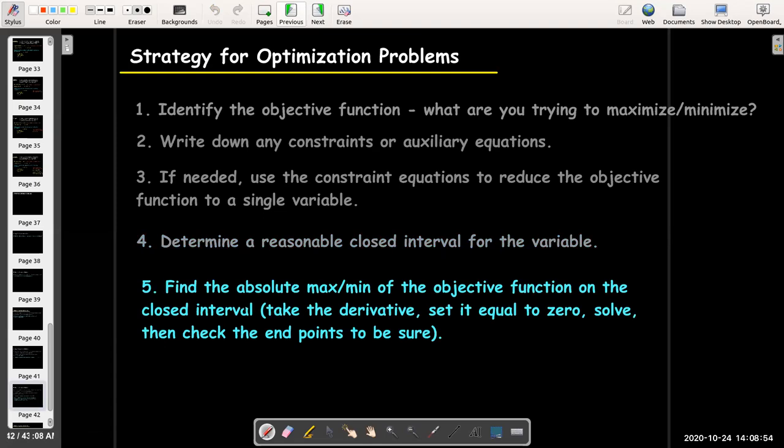And then we're going to find the absolute max and min of the objective function on the closed interval. So, we're going to look at the critical numbers. So, we're going to take the derivative, set it equal to 0, and solve.